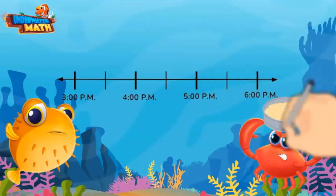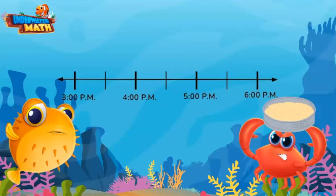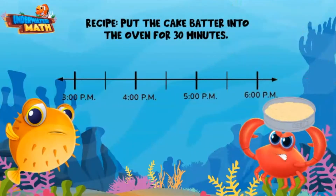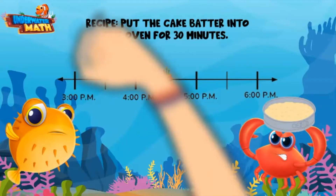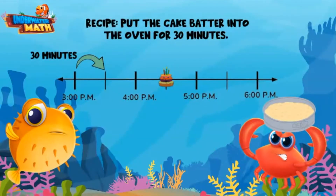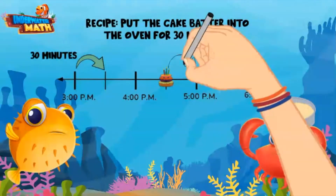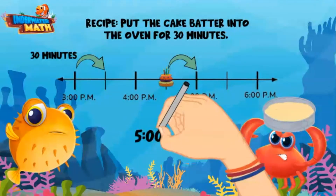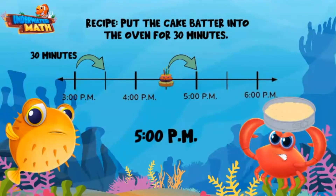I whipped up this cake batter earlier today — we just need to put it in the oven. Let's put it in the oven at 4:30 PM. After 30 minutes we can take the cake out. What time can we take the cake out? Let's look at the number line. Each tick mark represents a 30-minute interval. We start at 4:30 PM and make one 30-minute jump — we land at 5:00 PM, and that is when we can take the cake out.